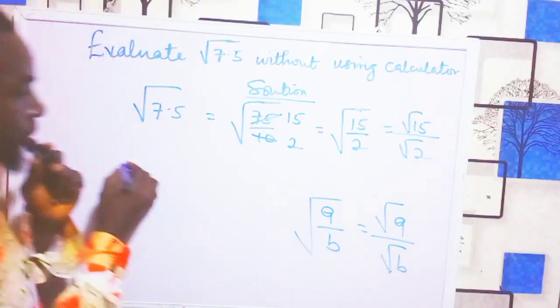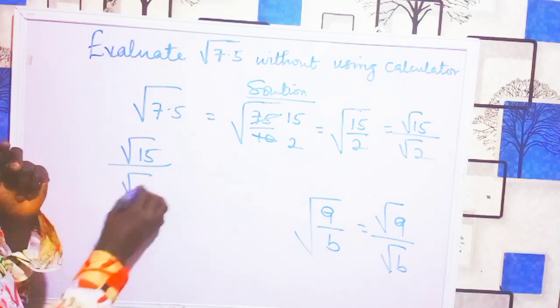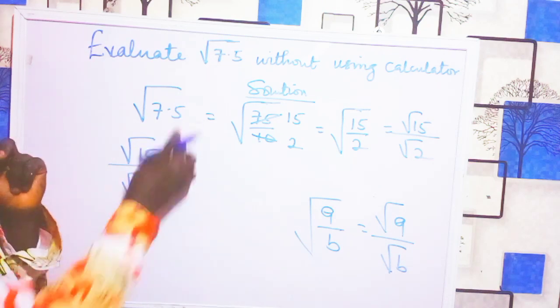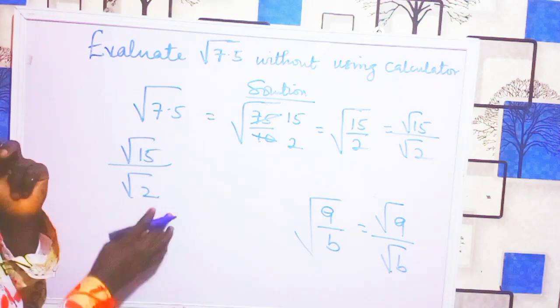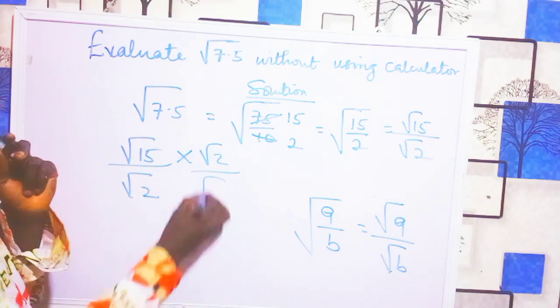How do we do that? We have square root of 15 over square root of 2. We multiply the numerator and denominator by root 2, that is root 2 over root 2.